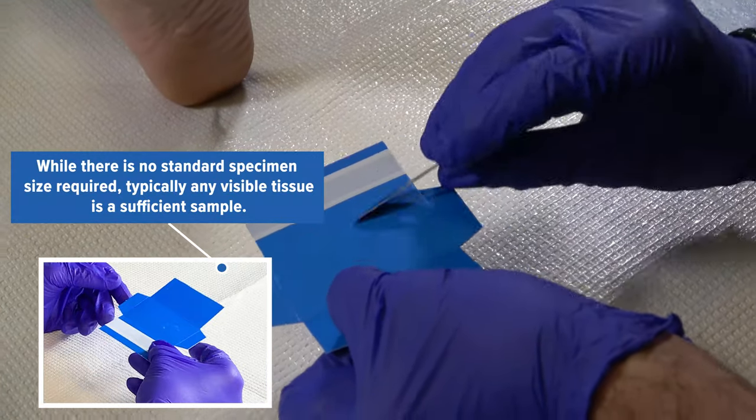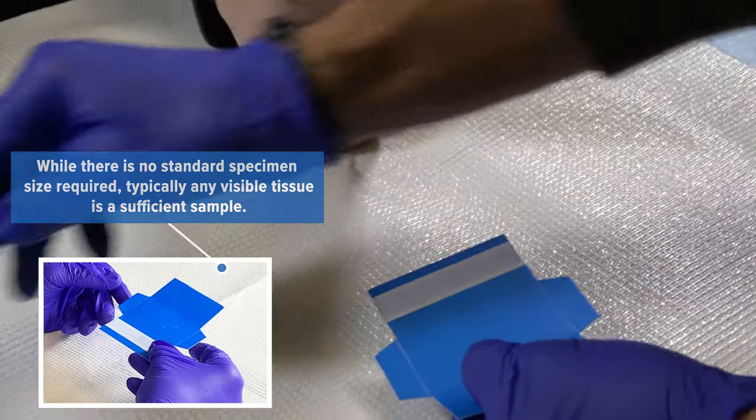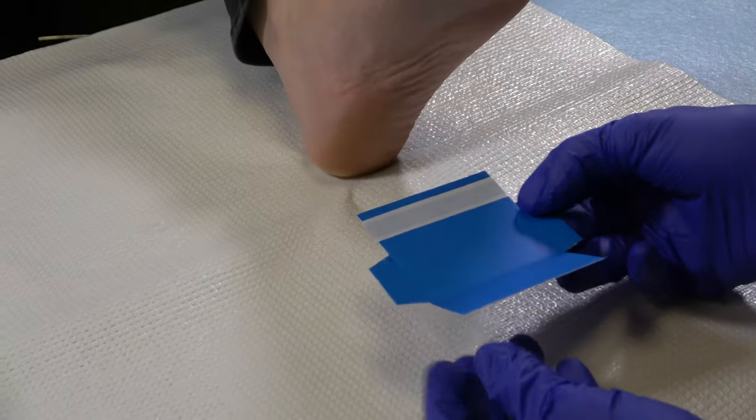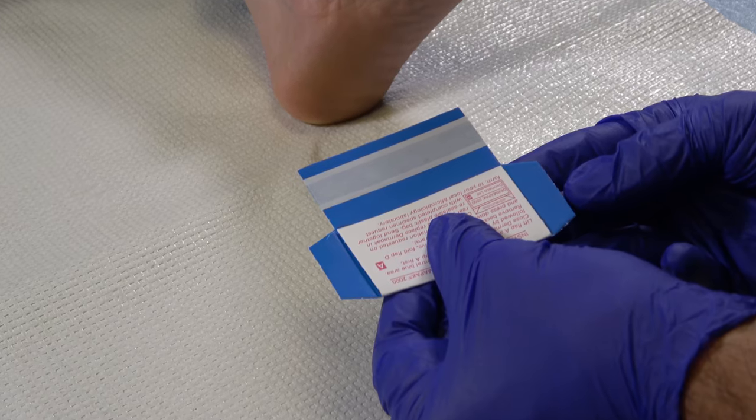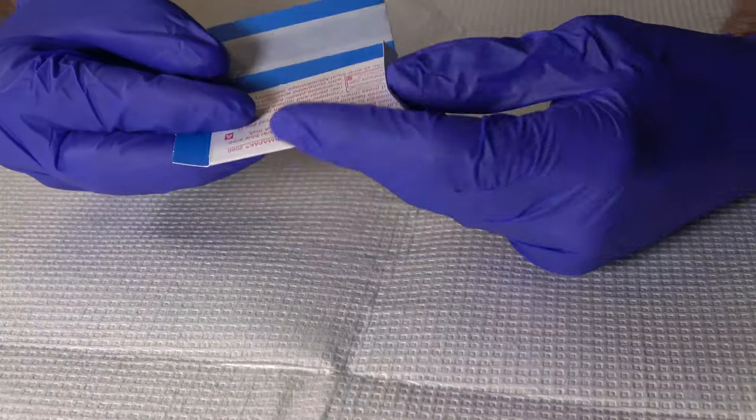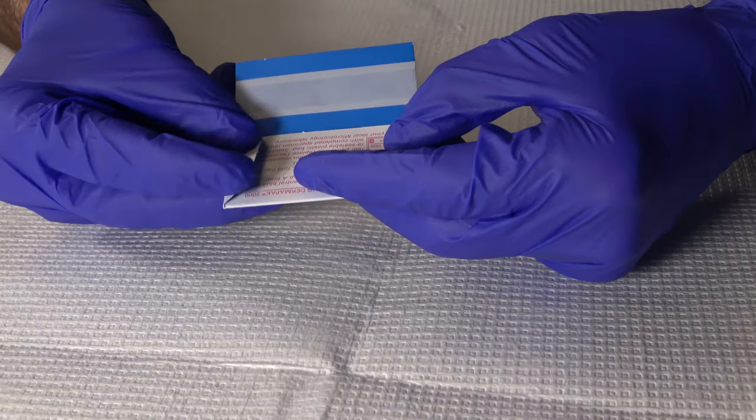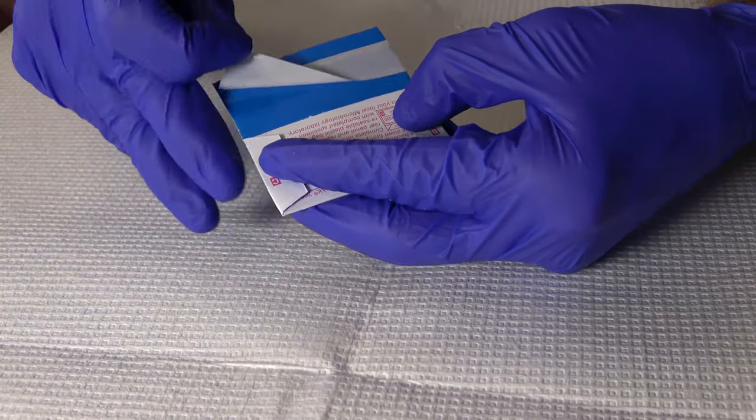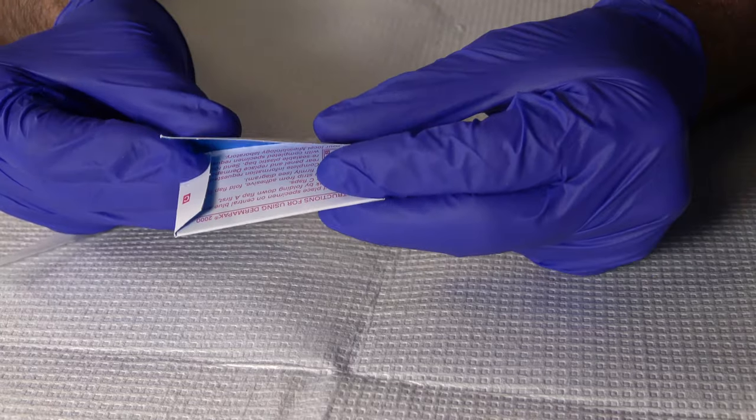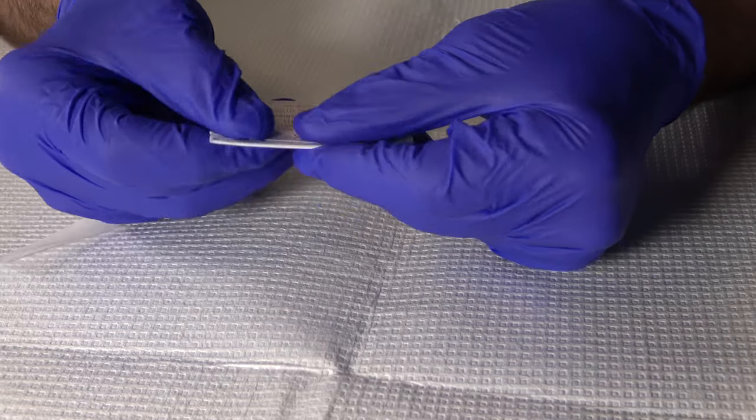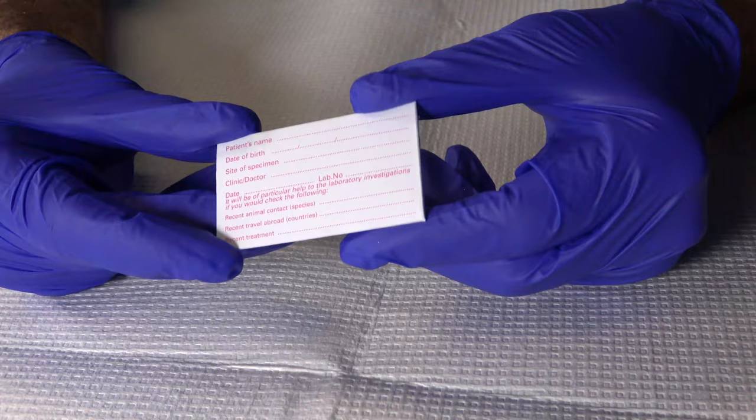Any amount of visible tissue is typically sufficient for testing. After collecting the specimen, fold the bottom part of the collection pack labeled A up to cover the sample. Next, fold the B and C side flaps. Remove the paper covering the adhesive strip and fold flap D down, pressing firmly to ensure adhesion and closure.